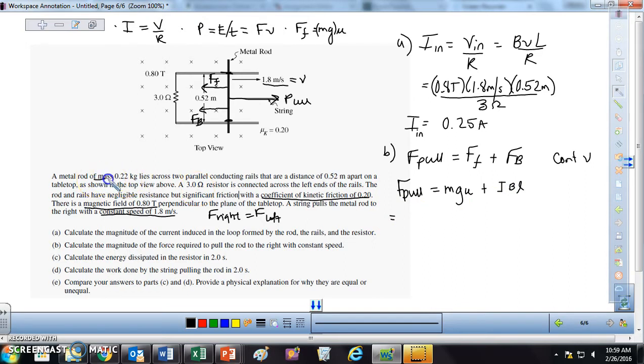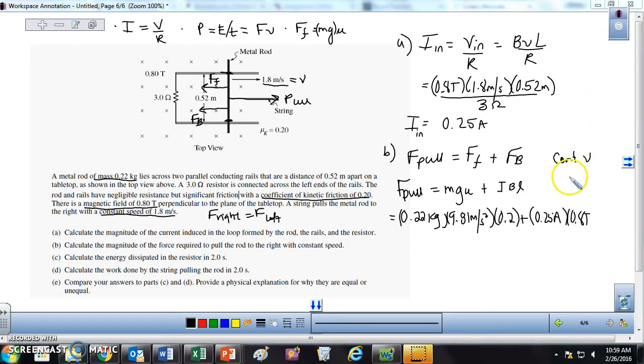So the mass of the rod is right here, is 0.22. G is our constant, 9.81. And then it's looking for the coefficient of friction, which is going to be our 0.2 value right here. Then we're going to use the current that we calculated from A. The magnetic field, which is the 0.8 Tesla. And then the length of the rod again. So when you do that out, let's calculate it. I get 0.54 newtons of force to pull this.